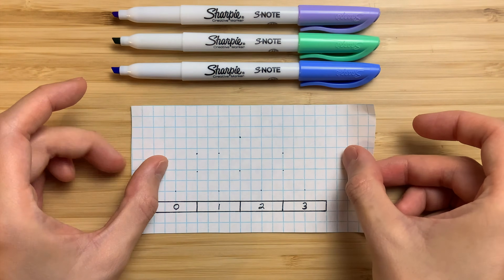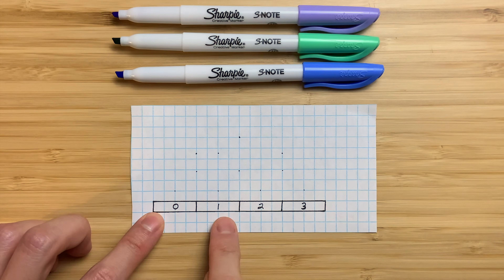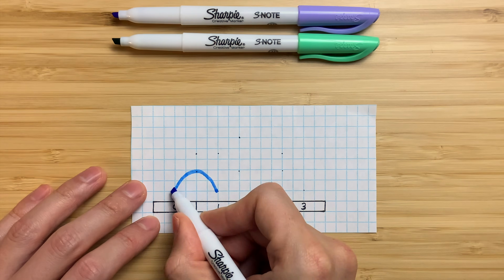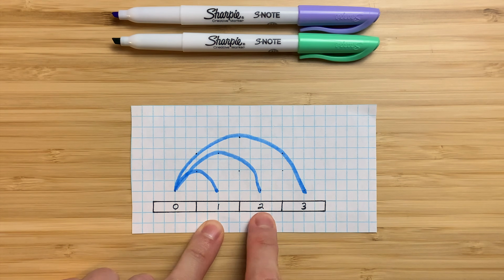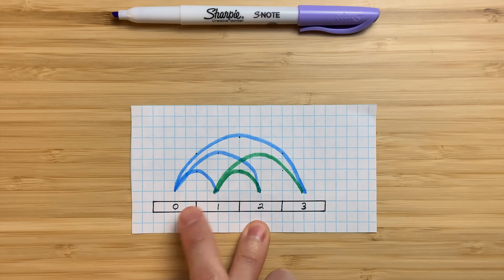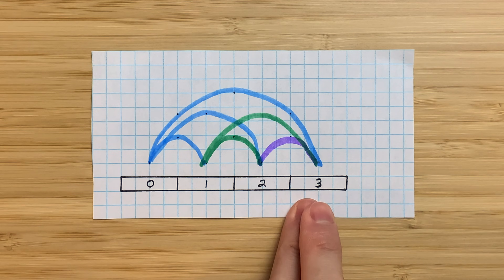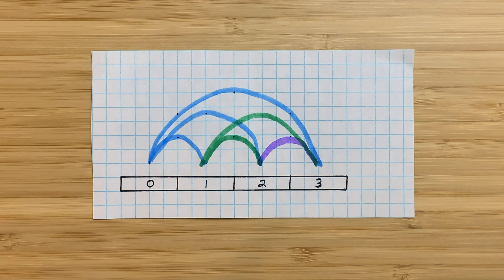Let's think about this with a concrete example. Imagine an array with four elements. Starting with index 0, we can pair it with 1, 2, and 3. Index 1 has already been paired with 0, so we just need to move forward to 2 and 3. Index 2 has already been paired with 1 and 0, so we just need to move forward to 3. By the time we get to index 3, it's already been paired with all the previous indices. So for each index, we just need to pair it with the indices that follow, and that gives us all possible pairs.